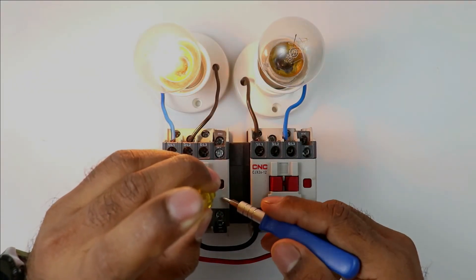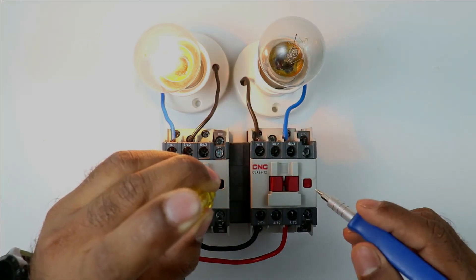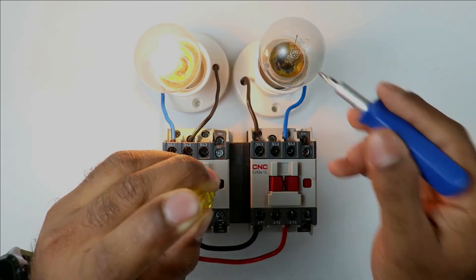This contactor is on now. You can see this lamp is in on condition. If I try to turn on this contactor you can see it is locked and lamp is not glowing.